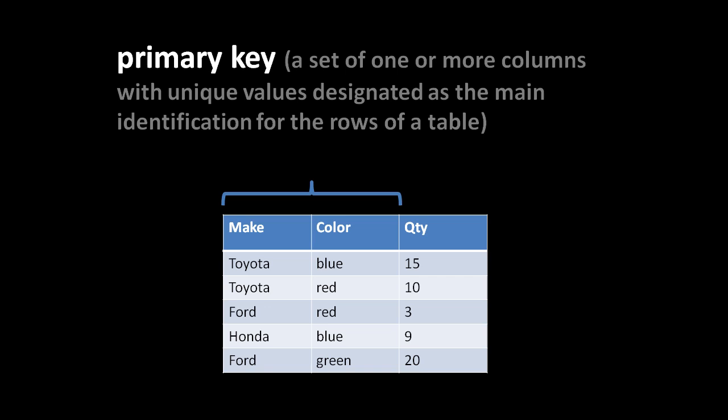In our database schemas, when we sort out what tables we need and what columns they should have, we generally designate for each table a primary key. The primary key is the column or set of columns whose values are used to uniquely identify each row. In this example table, it makes most sense to designate the make and color columns together as the primary key, because you wouldn't have two rows where both make and color are the same.